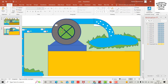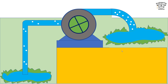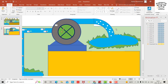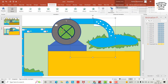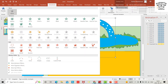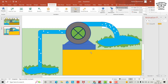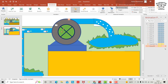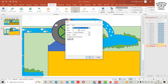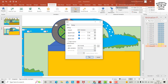Now let's see the animation. We also need to provide animation here — add a Spin animation. Set timing: Start With Previous, Until End of Slide, and make it smooth.